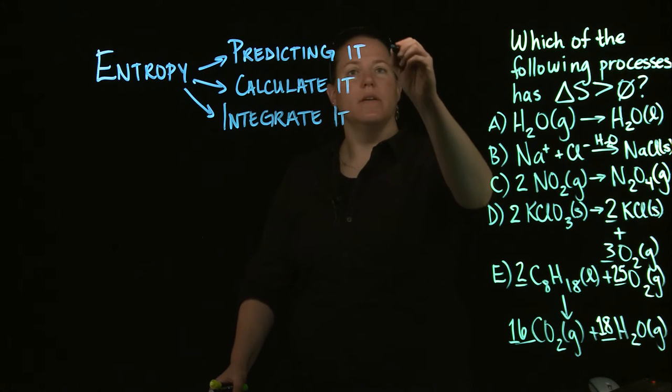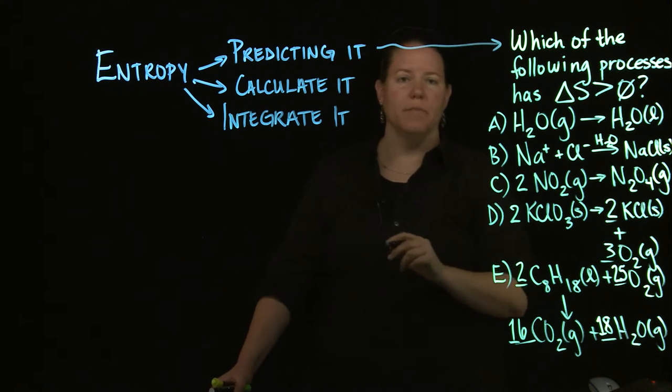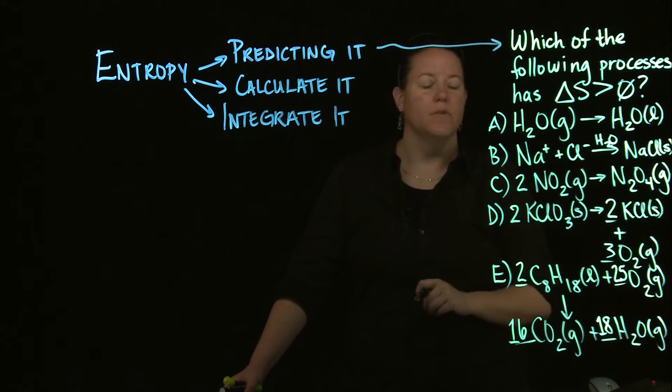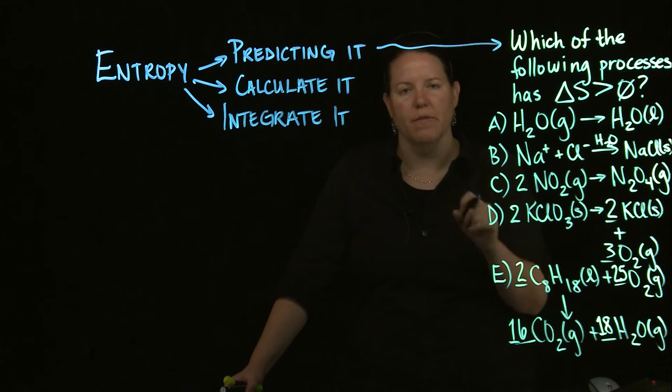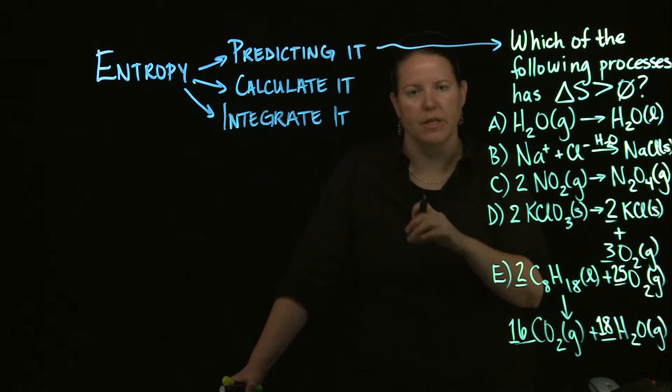So in terms of predicting it, the kind of question you're going to get is something just like this, right? What is how does entropy change based off of a reaction that's given or a set of conditions?